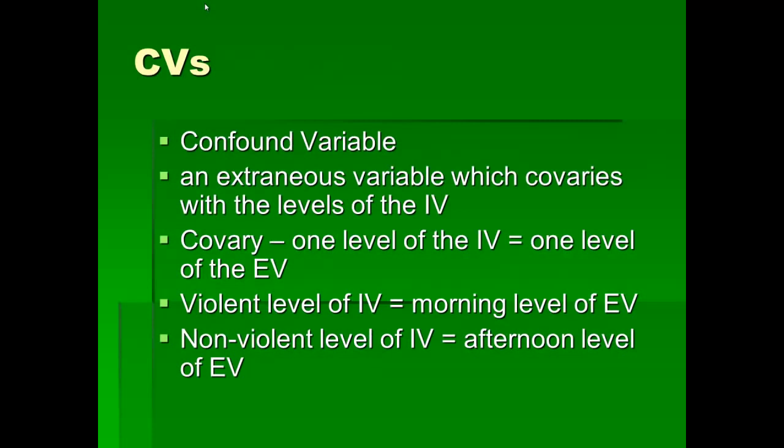I've talked about extraneous variables. Now let's move on to confound variables. A confound variable is an extraneous variable which co-varies with the levels of the independent variable. By co-vary, I mean one level of the independent variable is always associated with one level of the extraneous variable.